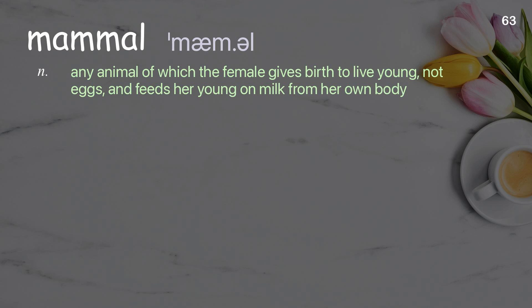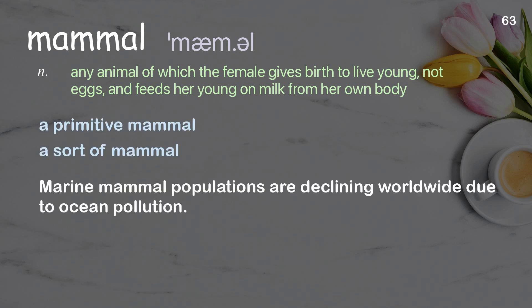Mammal: any animal of which the female gives birth to live young, not eggs, and feeds her young on milk from her own body. Examples: a primitive mammal, a sort of mammal. Marine mammal populations are declining worldwide due to ocean pollution.